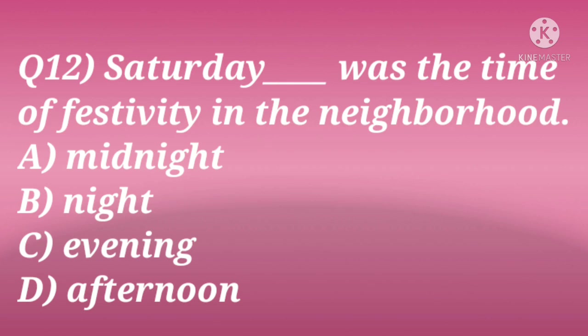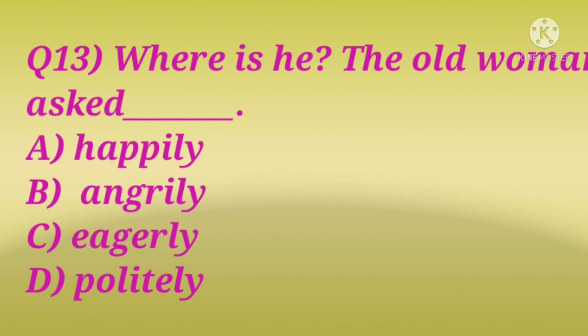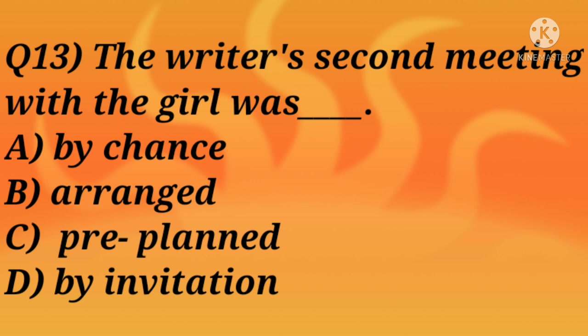Question 12: Saturday — was the time of festivity in the neighborhood. What is the correct time — midnight, night, evening, or afternoon? The correct answer is night. Question 13: 'Where was he?' the old man asked — happily, angrily, eagerly, or politely? When Maggie told her mother that an Indian had come to meet her, she wanted to know about him eagerly, so the correct answer is eagerly.